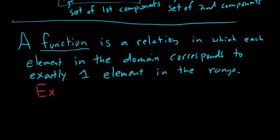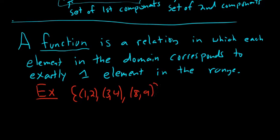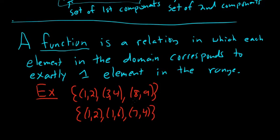Let's look at some examples. Say we have the relation {(1,2), (3,4), (8,9)}, and then another relation {(1,2), (1,6), (7,4)}. Both of these are relations — they're both sets of ordered pairs. The domain of the first is {1, 3, 8} and the range is {2, 4, 9}. The first relation is a function, because each x goes to only one y.